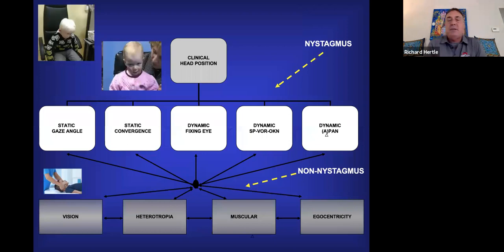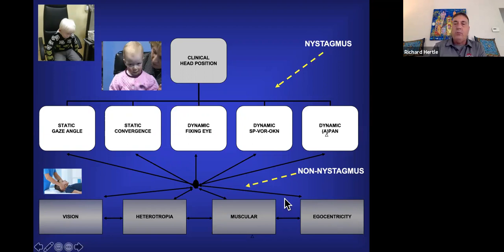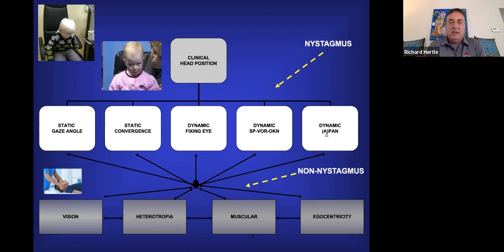Head position and nystagmus is very complex. A clinician who doesn't take all these conditions into account and just looks at head position while ignoring other variables may get into trouble with medical or surgical treatment. There are dynamic and static nystagmus components, and non-nystagmus components. We recently found that children who grow up using a head posture — the brain thinks that head posture is straight — so even after treatment they may still posture their head, because the brain perceives the crooked head posture as straight.